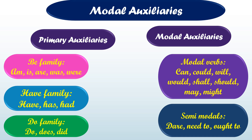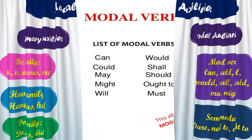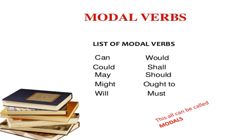Now let us learn about modal verbs. The modal verbs are: can, could, may, might, will, would, shall, should, have to, and must — all of these can be called modals. Modal verbs are used before the main verb to express different meanings and intentions.